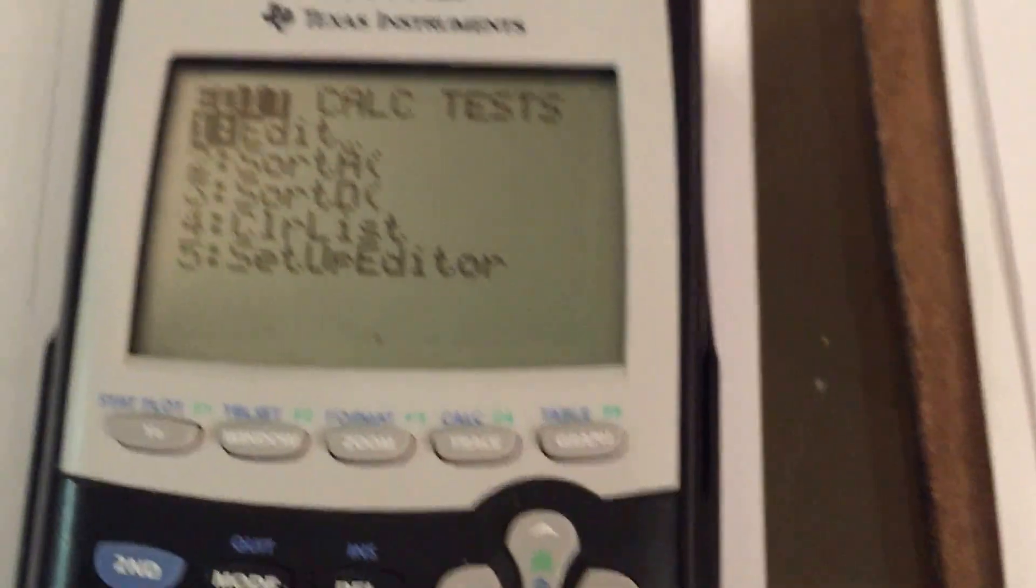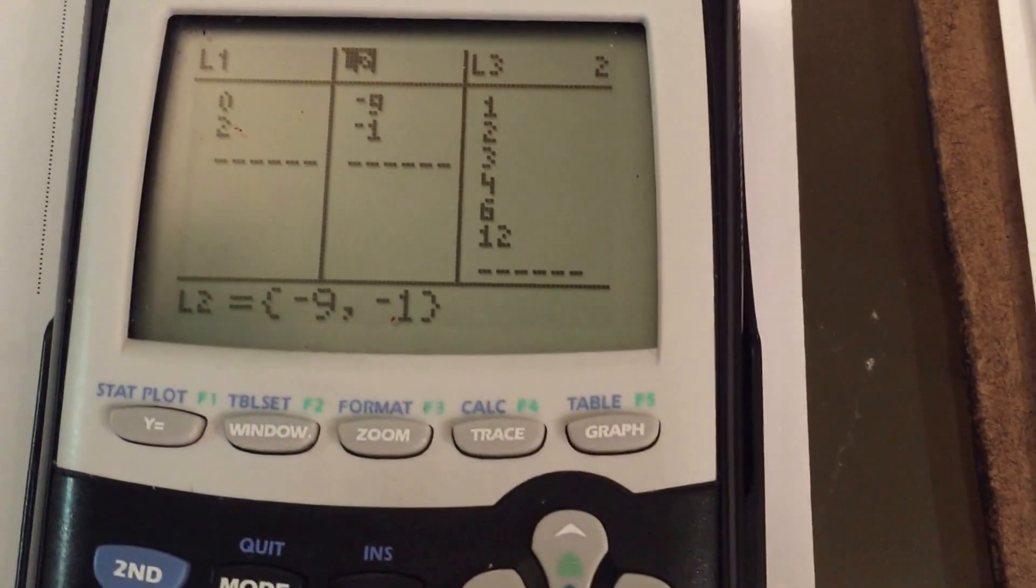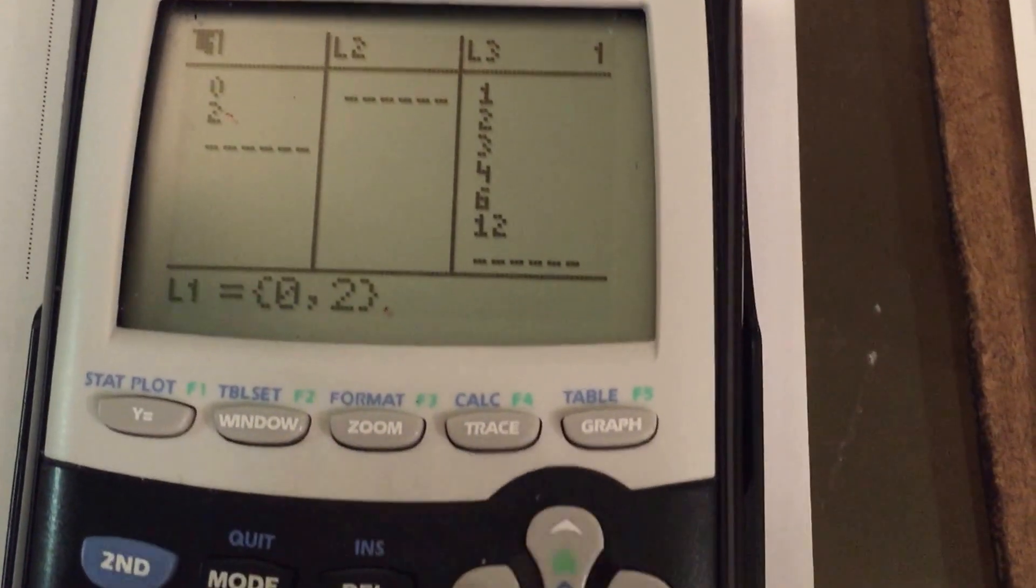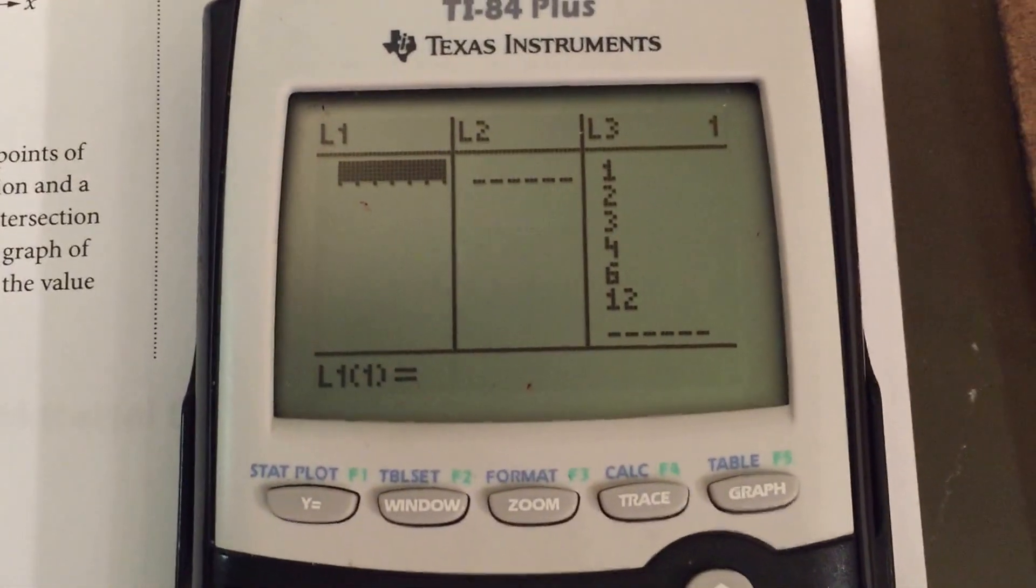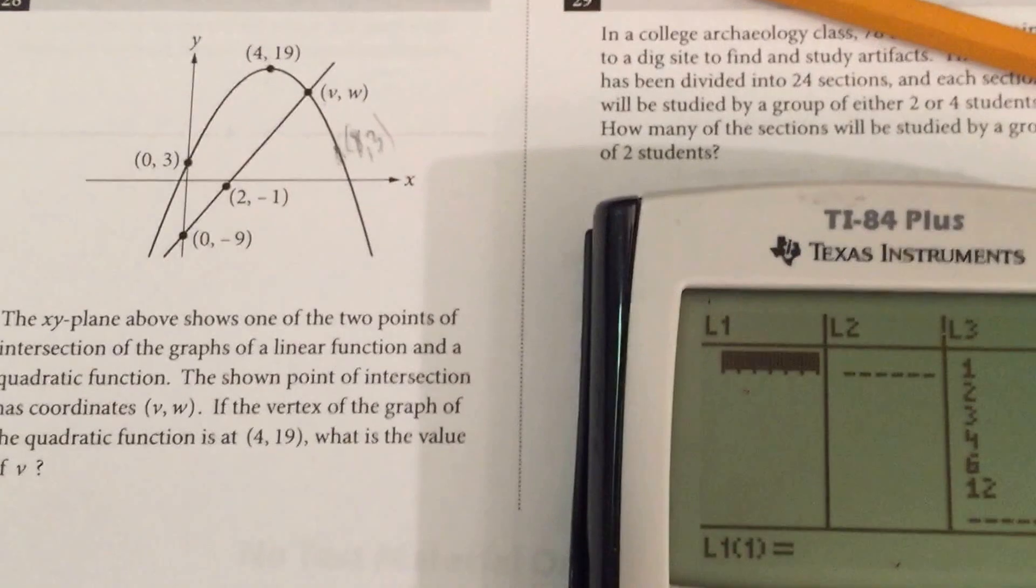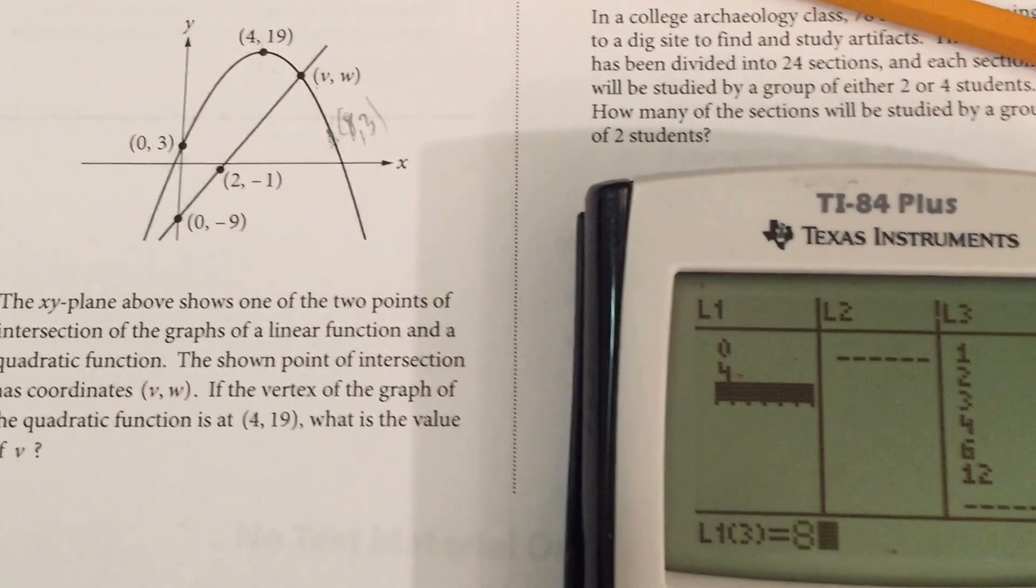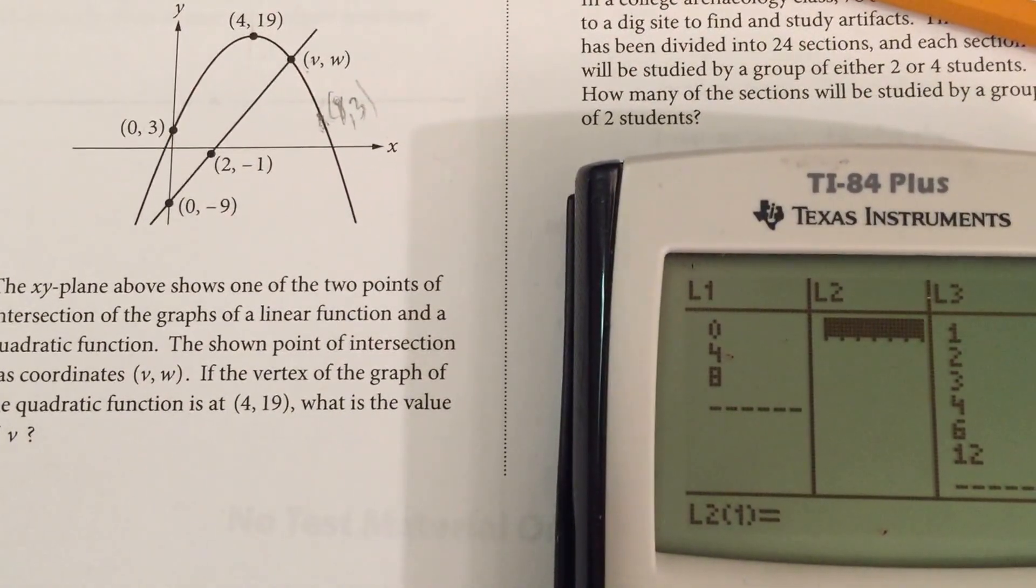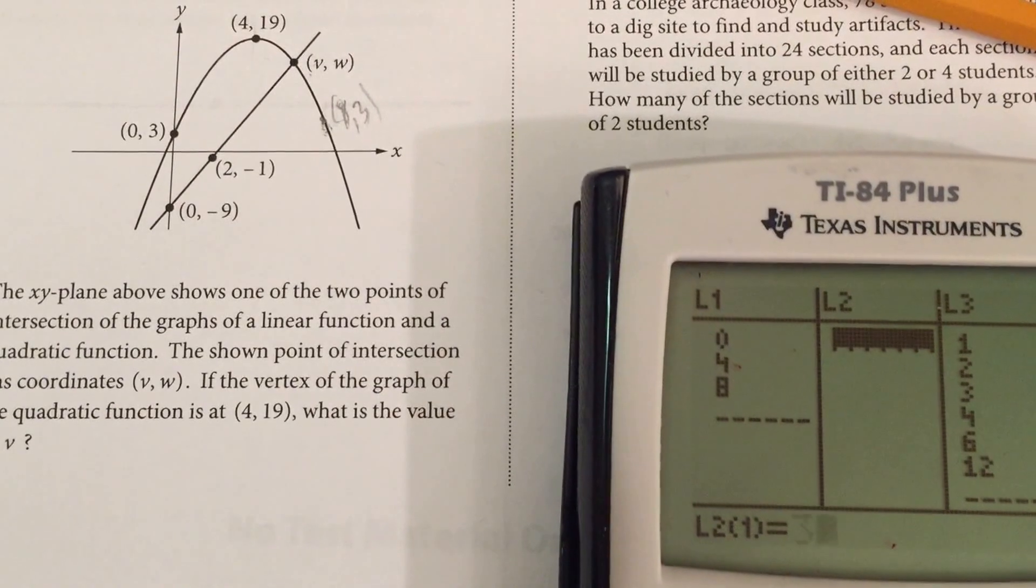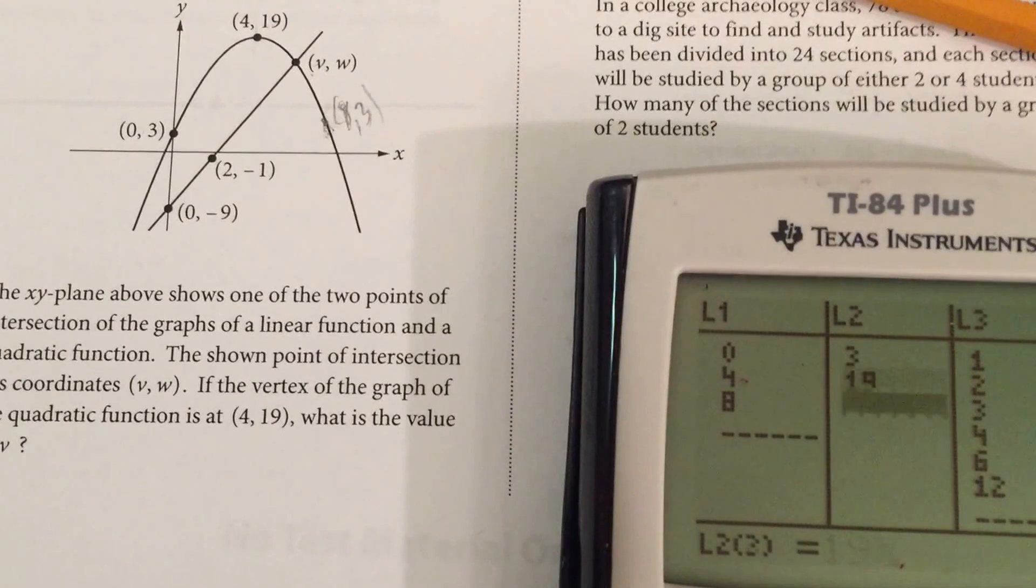Now again we would go to stats, we would go to edit. And we have information or numbers in there, so we're going to clear those out. Go over to L1, clear, press enter. And now I'm just going to enter the coordinates. So it's going to be 0, and then 4, and then 8. Those are the X coordinates. And then we're going to enter the corresponding Y coordinates. So it would be 3, so that would be 3 there, and then it'll be 19, and then it'll be 3 again. We've got three points.